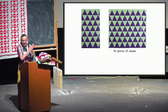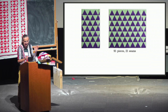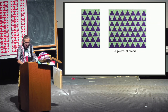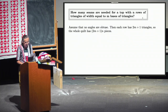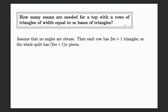I sew seven narrow tubes together and then make one cut. The cut is a quarter of an inch away from a set of vertices on both sides, so that when I add seam allowance all the way around I won't be chopping any corners. There are some formulas for that. How many seams are needed for a top with n rows of triangles of width equal to m bases? If no angles are obtuse, each row has 2m+1 triangles, so the whole quilt has (2m+1)×n pieces.